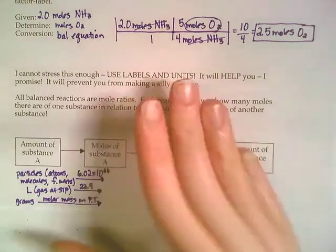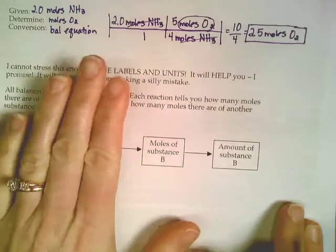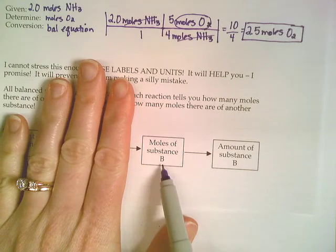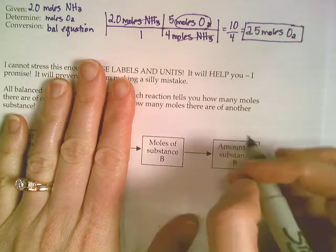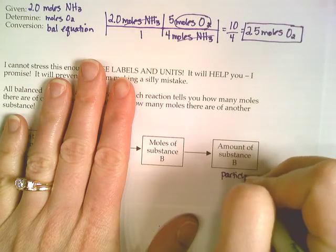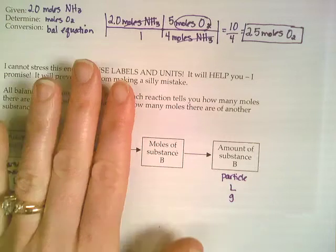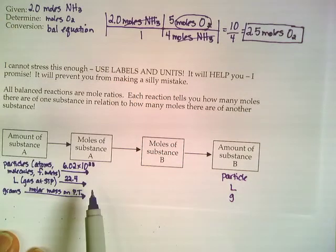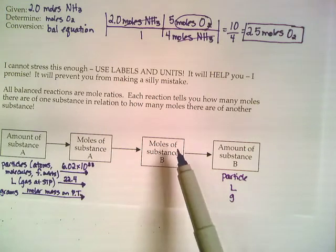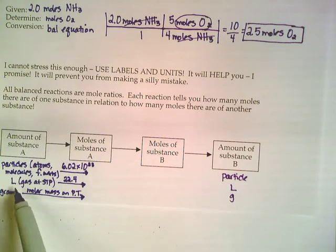Now, the end of a stoichiometry problem is also stuff that you already know how to do, because that's just starting with the moles and going to some amount. So you might be ending with some kind of particle or liter or gram, and you're going to use the same conversion factors as we do over here. They would just be flipped upside down because you'd be starting with moles instead of starting with one of these units.